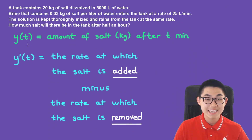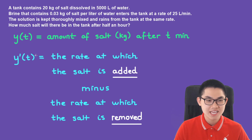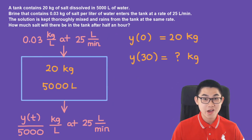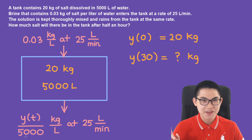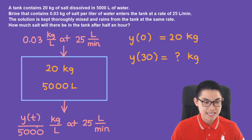First, we define y(t) as the amount of salt in kilograms after t minutes. Then y'(t), the derivative of this function, is basically the rate at which salt is added into the tank minus the rate at which salt is removed. It's also important to draw a diagram. Here we have our tank with 20 kilograms of salt in 5000 liters of water. Salt enters at 25 liters per minute and also leaves at the same rate. y(t) is the amount of salt leaving over 5000 liters of water — that's why we have this fraction.